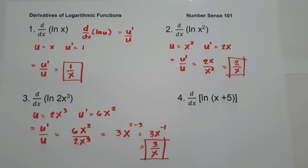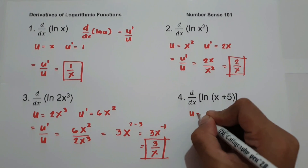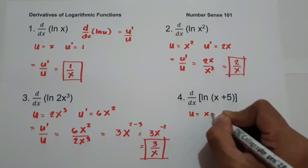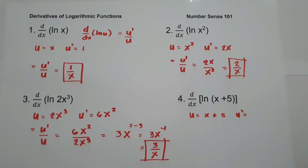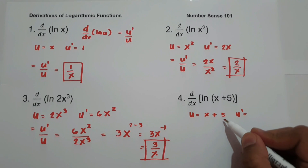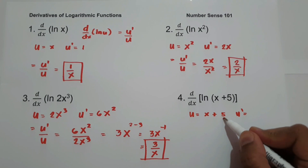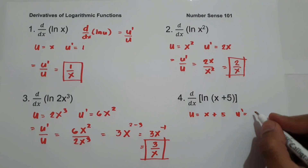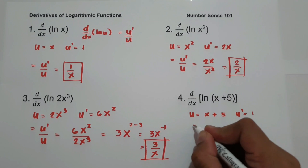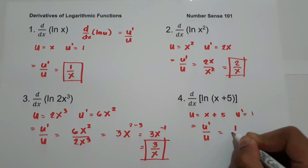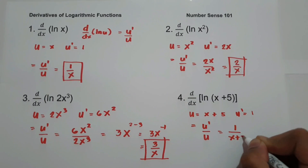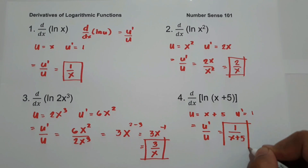Number four: what is the derivative of ln(x + 5)? Let u = x + 5, so u' = 1 (since the derivative of 5 is 0 and the derivative of x is 1). Applying u' over u gives 1 over (x + 5). This will be our answer.